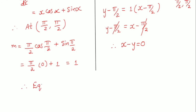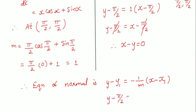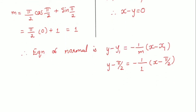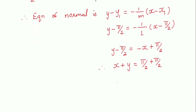Now finding the equation of normal: y minus y1 is equal to minus 1 by m into x minus x1. So y minus π/2 is equal to minus 1 by slope m is 1, into x minus π/2. Multiplying through, y minus π/2 is equal to minus x plus π/2. Moving minus x to the left side, therefore x plus y is equal to π/2 plus π/2, which is 2π/2 — the 2 cancels — so that is equal to π. This is the equation of normal.